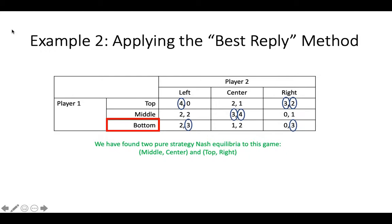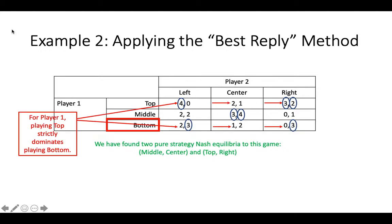Before we conclude, note something about this last step — we could have skipped it. Because for player one, top strictly dominates bottom. Thus, we could have eliminated the strategy of bottom for player one before we even started looking for Nash Equilibria. If player two believes that player one is rational, player two knows that player one will never play the dominated strategy of bottom, and thus doesn't really need to worry about finding a best reply to player one choosing bottom.